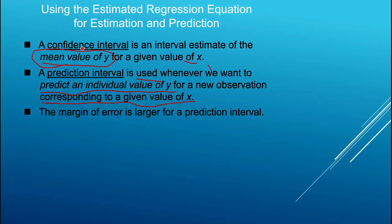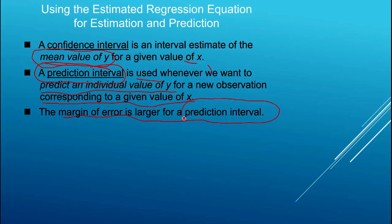Every time we sample we'll get different estimates of beta, leading to uncertainty in our prediction. But we don't have to worry about the variance of the error term when predicting the mean value of y, because the expected value of the error term is zero. However, for a prediction interval — an out-of-sample forecast — we have both sources of variation, because we're predicting a particular individual value of y and can't ignore the standard deviation of the error term.